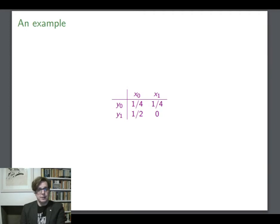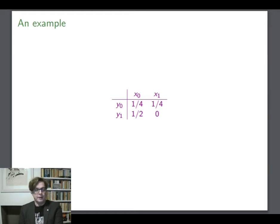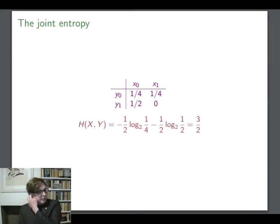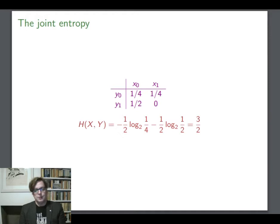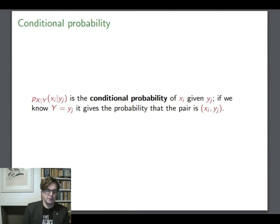Quick example. Here's a simple probability table: the probability of getting X1, Y0 is a quarter; the probability of getting X0, Y1 is a half; and it's impossible to get X0 and Y1 together — they have probability zero. So we can just use those probabilities in the formula to get the joint entropy. H(X, Y) is minus a quarter log of a quarter minus a half log of a half. The log base 2 of a quarter is minus two, the log base 2 of a half is minus one. Put all that together and you get three over two. That's the joint entropy.